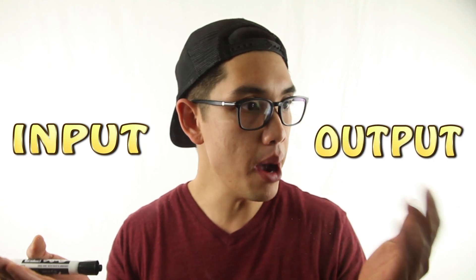A function rule is basically a rule that shows you how an input turned into an output. How did it happen? Well, we're gonna find out.